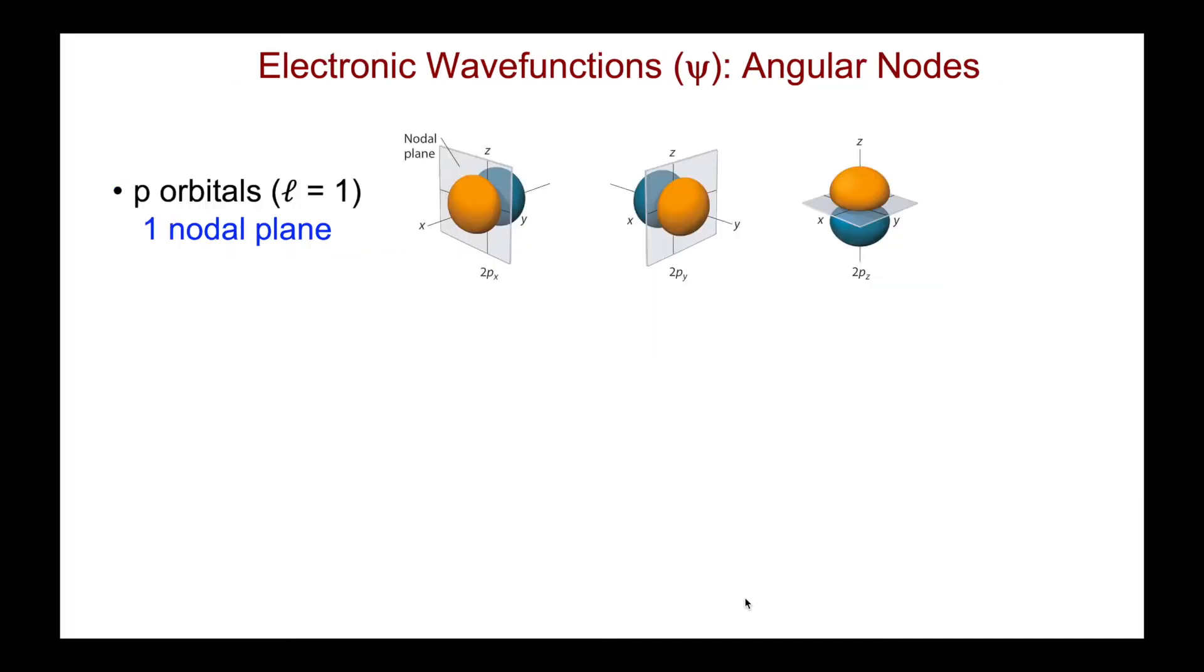Here are the angular nodes for the p orbitals, where there is one nodal plane, shown here for the px, py, and pz. And across that plane, we see a change in color in my boundary surface diagram, which indicates the change in phase.